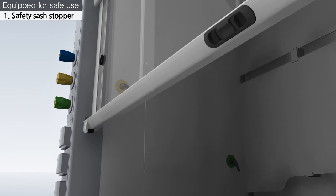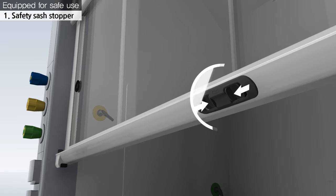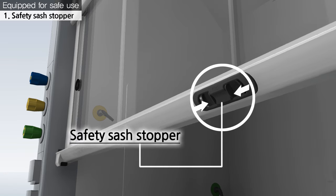With a safety sash stopper at the bottom of the front door, the door opening can be adjusted to over 500 millimeters.